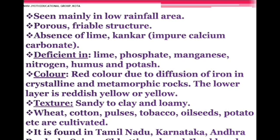Black soil color ranges from deep black to light black. It is mainly found in the Deccan trap region of Maharashtra, Gujarat, Madhya Pradesh, and Chhattisgarh. Red soil is seen mainly in low-rainfall areas with a porous, friable structure, absence of lime, and is deficient in lime, phosphate, manganese, nitrogen, humus, and potash. Its red color is due to diffusion of iron in crystalline and metamorphic rocks; the lower layer is reddish yellow or yellow. Crops like wheat, cotton, pulses, tobacco, oilseeds, and potato are cultivated in it. It is found in Tamil Nadu, Karnataka, Andhra Pradesh, Odisha, Chhattisgarh, and Jharkhand.